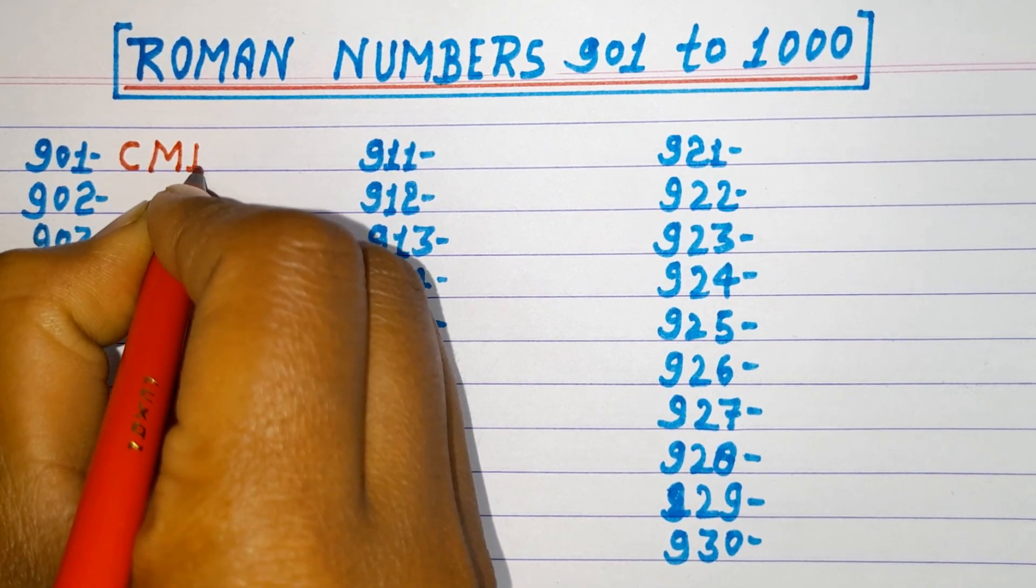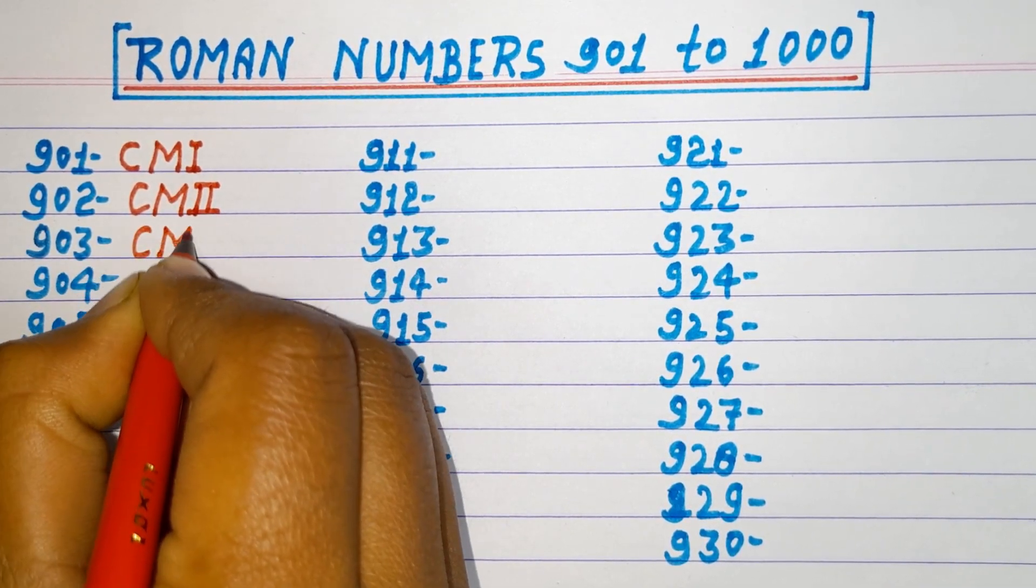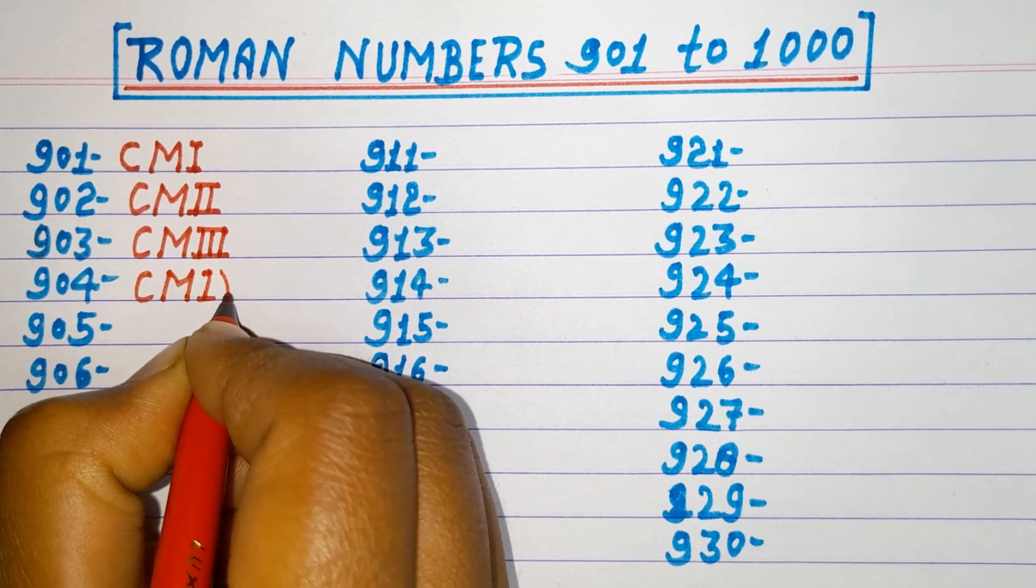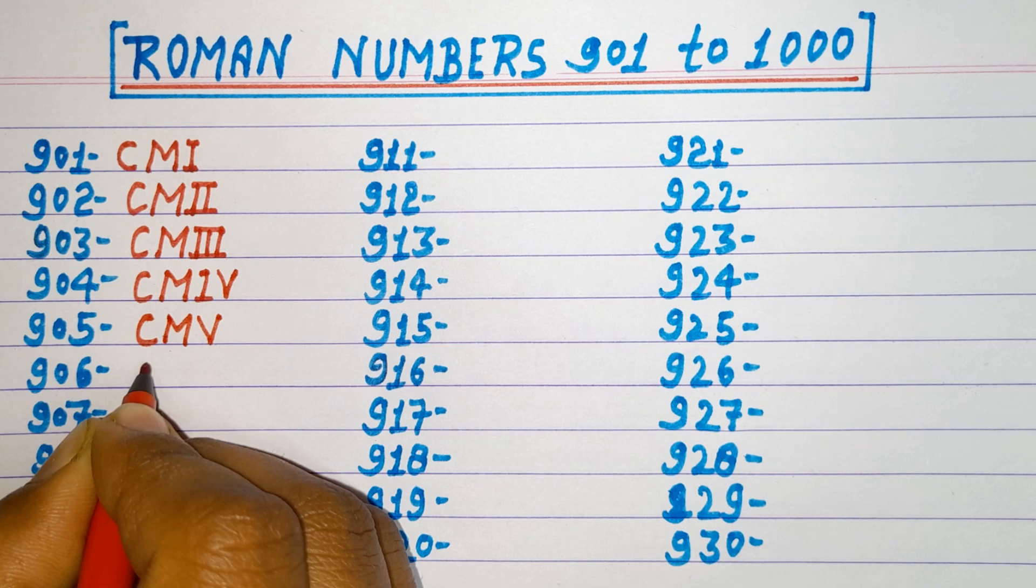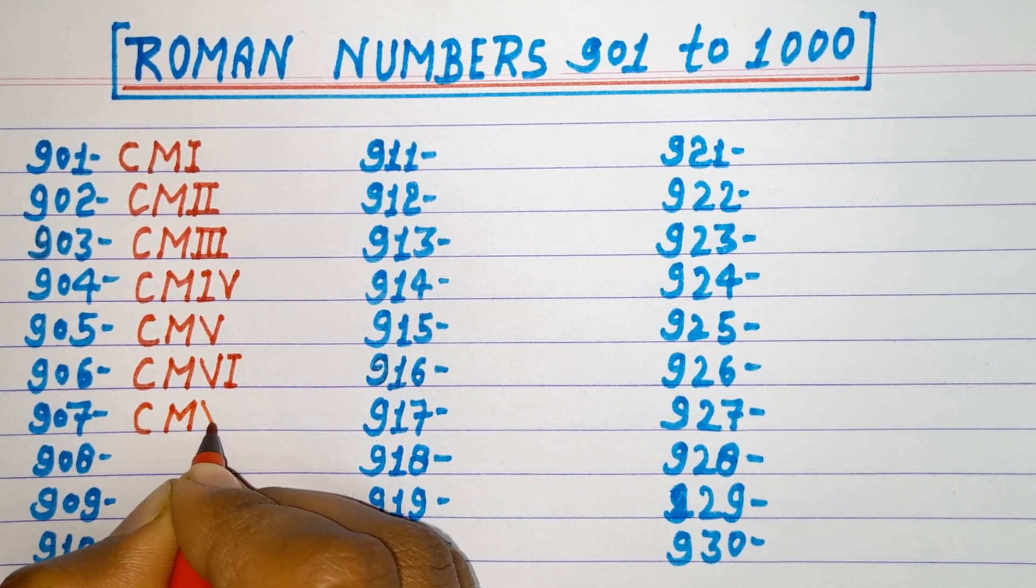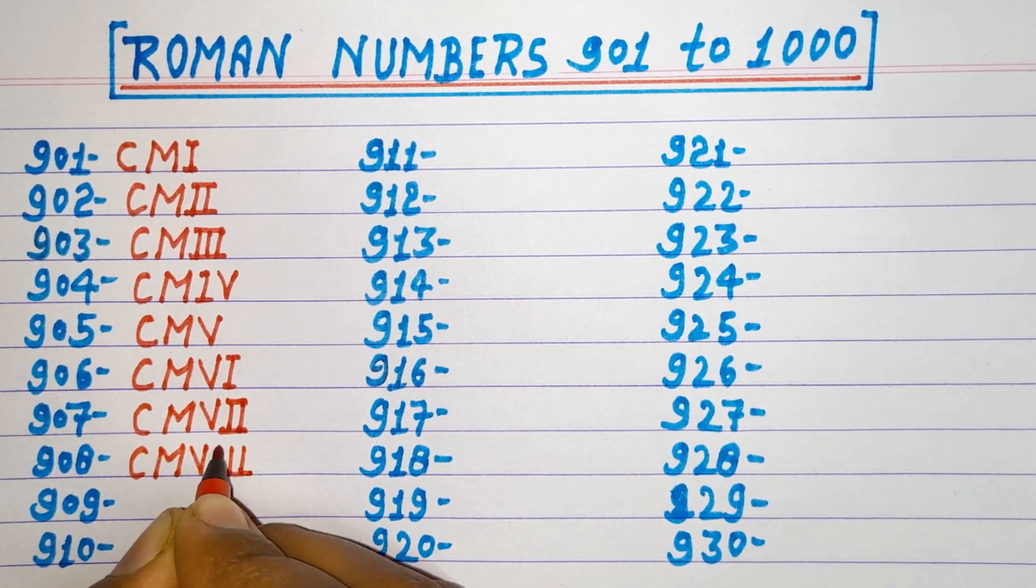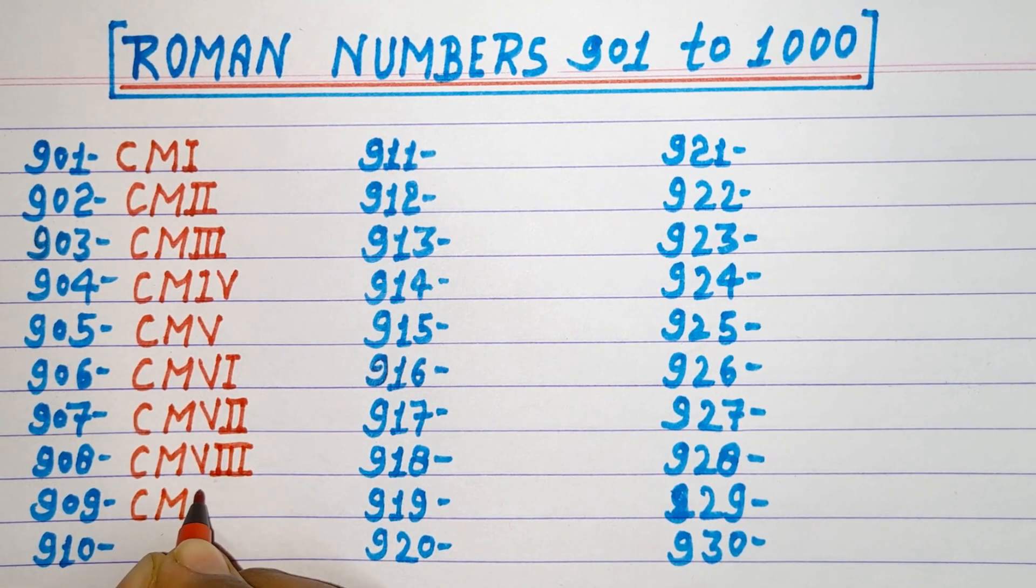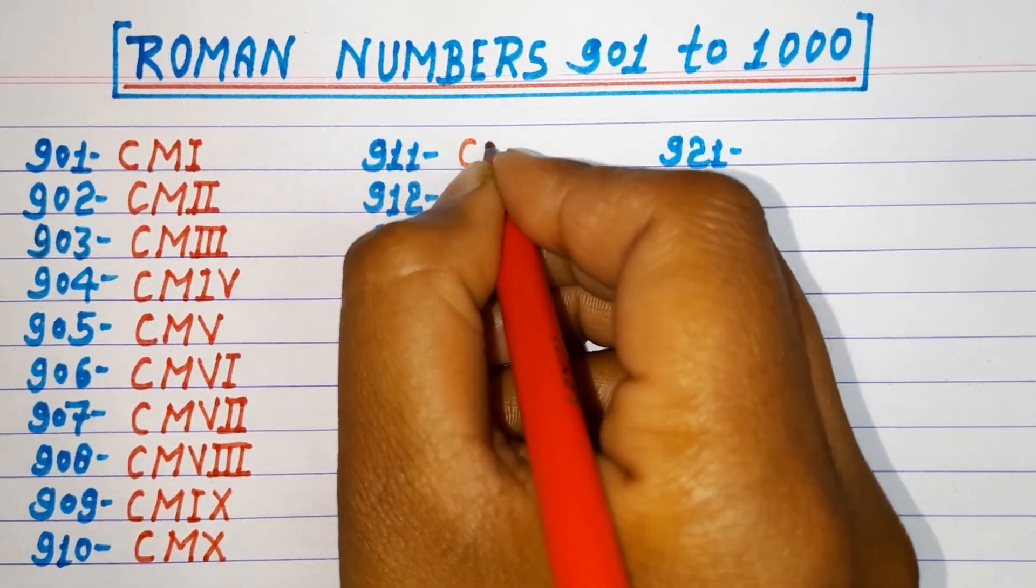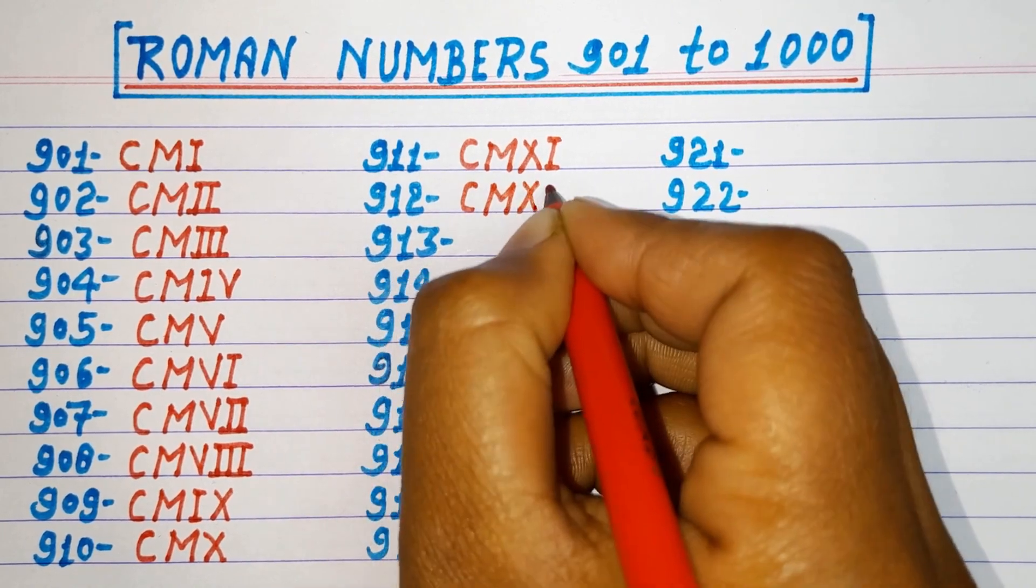901 CMI, 902 CMII, 903 CMIII, 904 CMIV, 905 CMV, 906 CMVI, 907 CMVII, 908 CMVIII, 909 CMIX, 910 CMX, 911 CMXI, 912 CMXII.